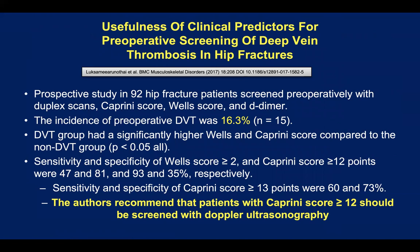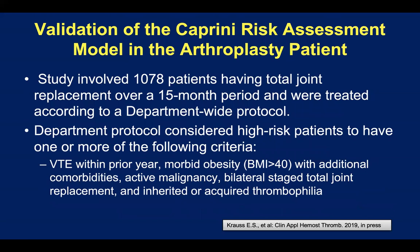We always say preoperative duplex scans are not recommended as routine screening in orthopedic patients, but take a look at this study of hip fracture patients. It showed the incidence of preoperative DVT was 16.3% when everyone was scanned. Using the Wells and Caprini scores helped identify those patients, but the Wells score had only 41% sensitivity compared to 81% for the Caprini score. The authors recommended that patients with a Caprini score of 12 or greater should be screened with preoperative duplex ultrasonography — illustrating how very high-risk groups deserve special consideration, including screening ahead of time and extended prophylaxis.